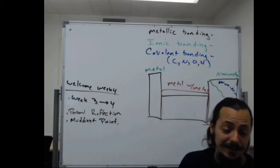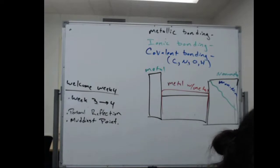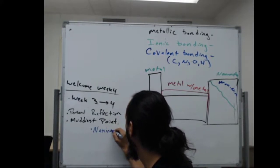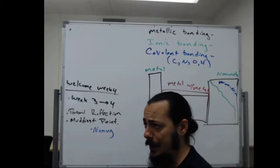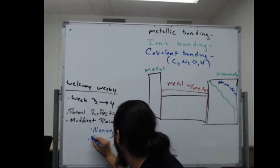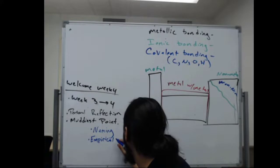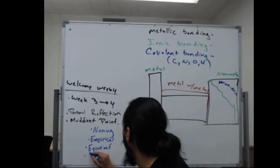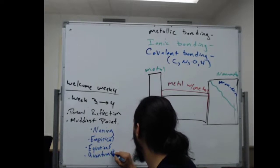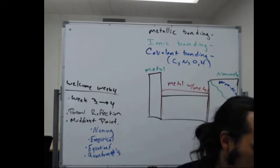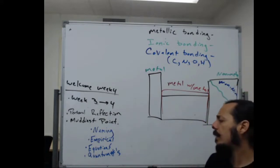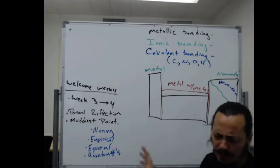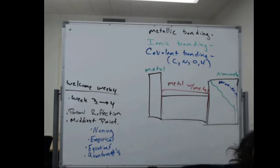The next thing to talk about are some of the muddiest points. A few muddiest points that people brought up: naming compounds, empirical formula, equations, and quantum numbers. We're going to talk about all of those things. For quantum numbers, I don't know what I can say beyond what I've already said in the video I made, but I'll try to think of something. Let's start with naming compounds, and to do that we're going to look at a couple of resources.